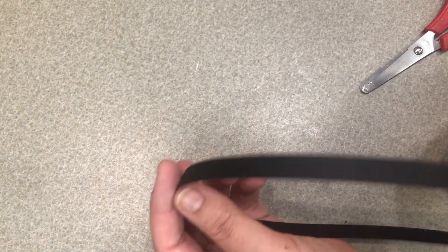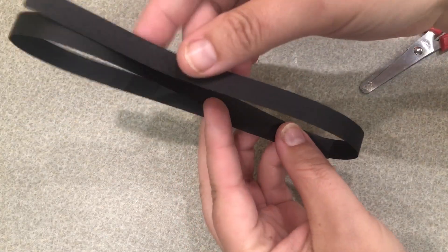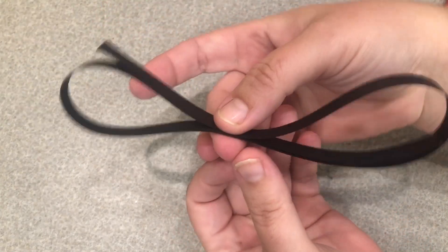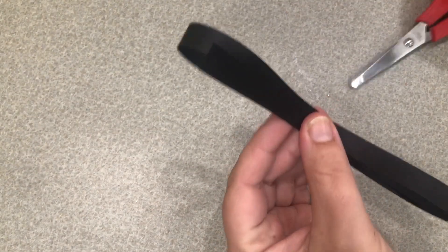To begin, we're going to take one of our black strips and cut it in thirds. So we're just going to kind of fold it over until we have about equal thirds. It doesn't have to be exact.